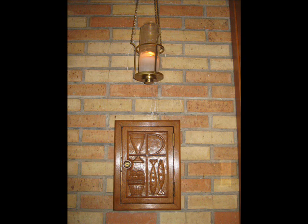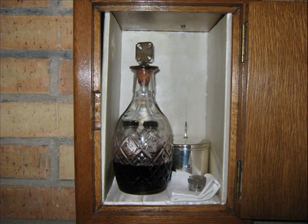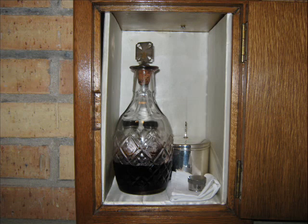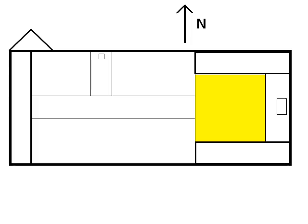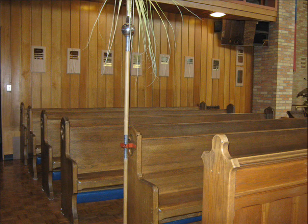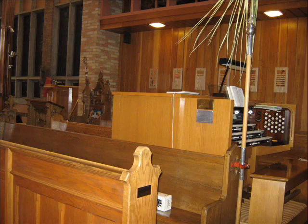Also in the sanctuary is a cupboard of sorts called an aumbry, which is where the reserve sacrament — that is, bread and wine already consecrated by a priest — is kept throughout the week for those who aren't able to attend a Sunday service. Outside the sanctuary, as mentioned earlier, is the chancel where the choir is seated in their particular pews.